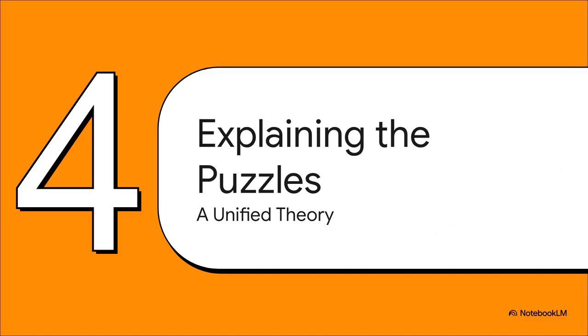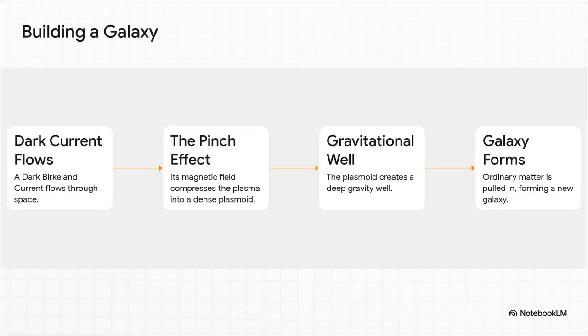So we have this powerful theory of a dark plasma template. Now let's see how it holds up against those cosmic mysteries we started with. Let's put it to the test. How do you build a galaxy in this model? It starts with one of these dark currents flowing through space. As it flows, its own magnetic field pinches it inward. And that compresses the dark plasma into a dense, self-contained magnetic bubble—what scientists call a plasmoid. This plasmoid then creates a massive gravitational well. And that pulls ordinary matter from all around, which then collapses to form the galaxy that we see.